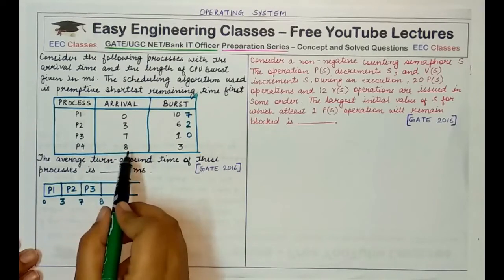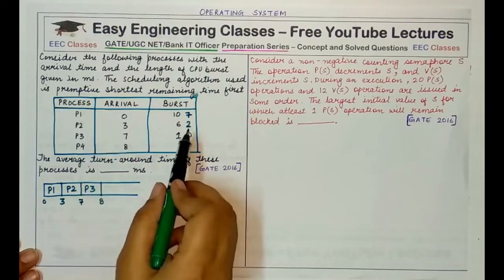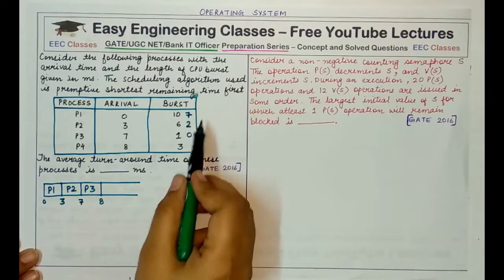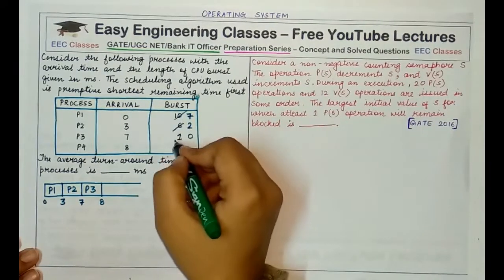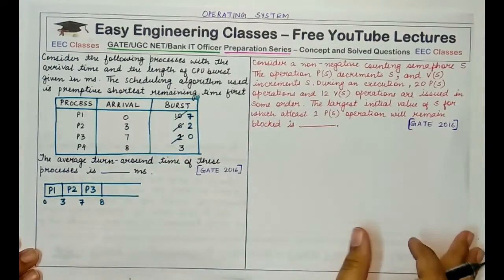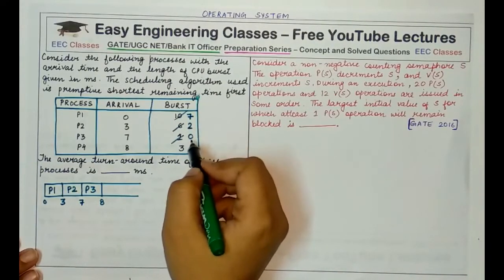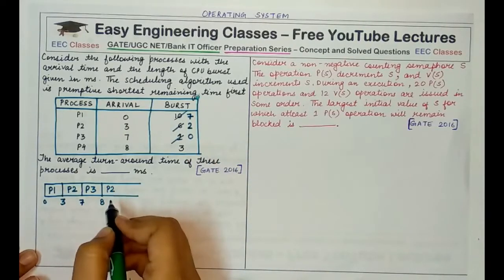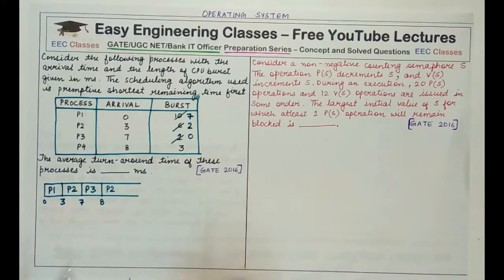At time eight, P4 arrives with a remaining time of three, P2 has a remaining time of two, and P1 has a remaining time of seven. P3 is already complete. The shortest remaining time belongs to P2, so we schedule P2 for the next two units.